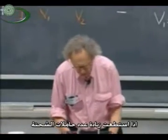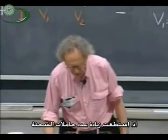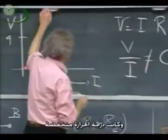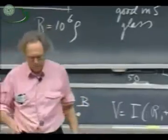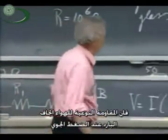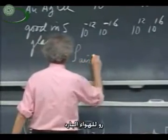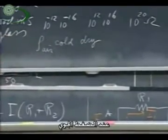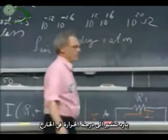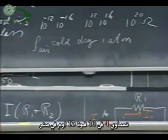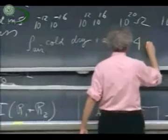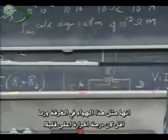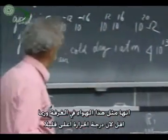If I can increase the number of charge carriers — if we have dry air and it is cold, then the resistivity of cold dry air at one atmosphere, rho for air, is about four times ten to the thirteen ohm meters. That is the resistivity of air. It is about what it is in this room, maybe a little lower because the temperature is a little higher.